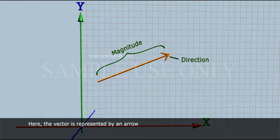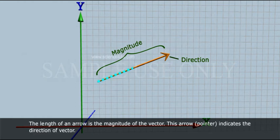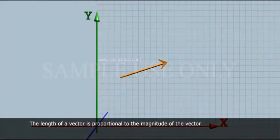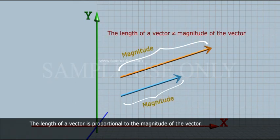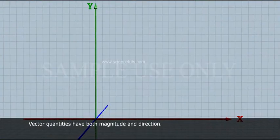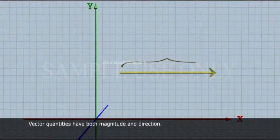Here, the vector is represented by an arrow. The length of an arrow is the magnitude of the vector. This arrow pointer indicates the direction of vector. The length of a vector is proportional to the magnitude of the vector. Vector quantities have both magnitude and direction.